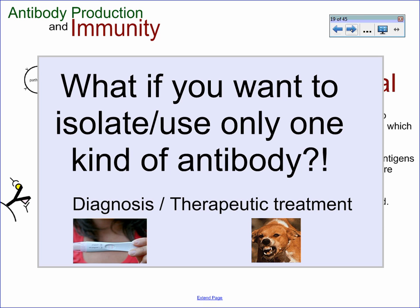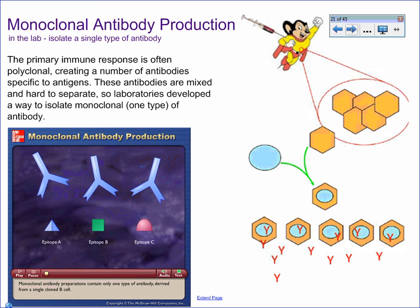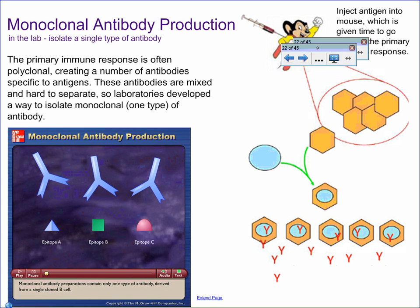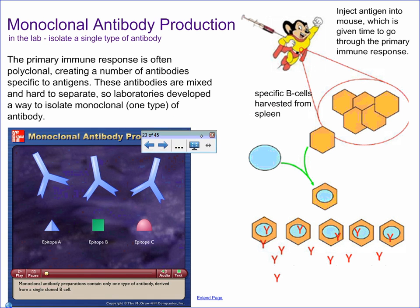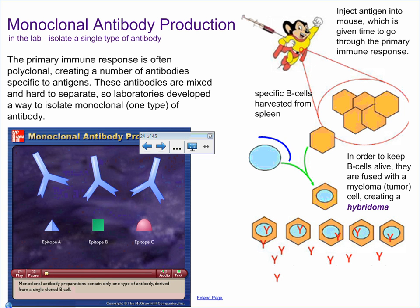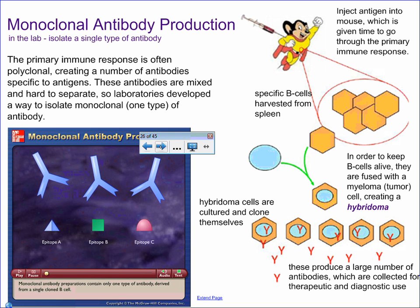If you want to get one kind of antibody — say for diagnosis or therapeutic treatment, like the diagnosis of pregnancy or therapy for the rabies virus — you may want to do monoclonal antibody production. You inject a mouse or other small mammal with a pathogen so it goes through its immune response. You then take specific B cells from its spleen, fuse them with a myeloma cancer cell, and that produces something called a hybridoma. That allows them to survive longer, continually reproduce through mitosis, and survive better outside the body — producing one specific type of antibody.